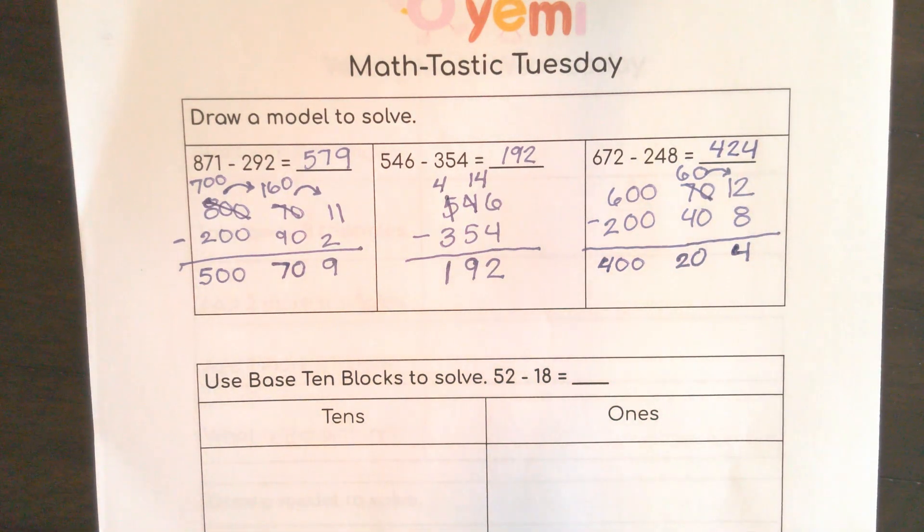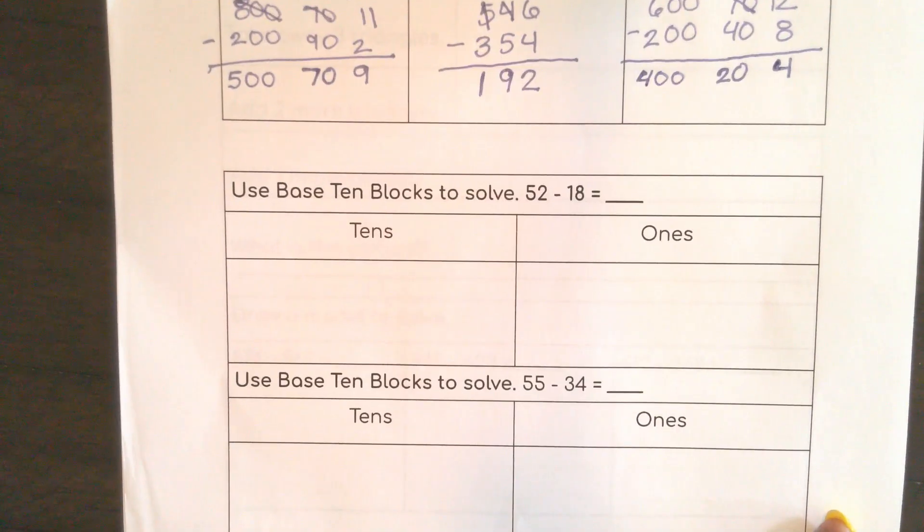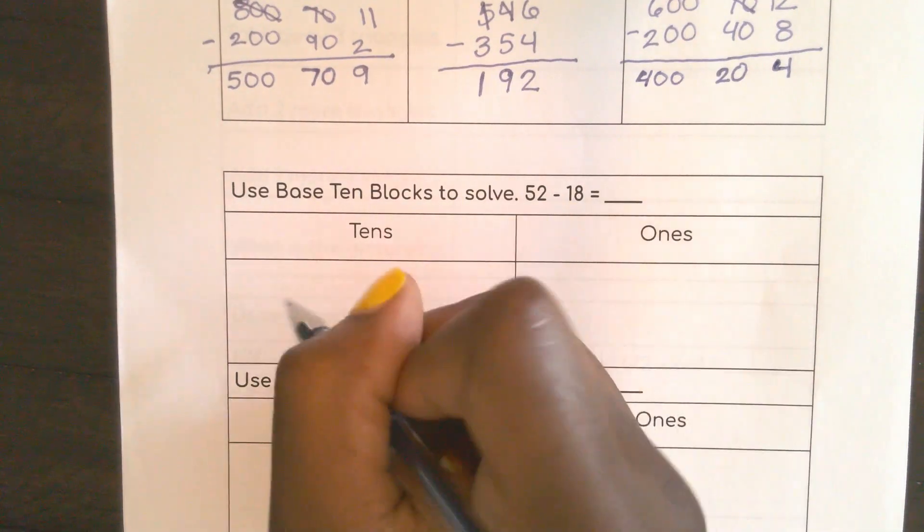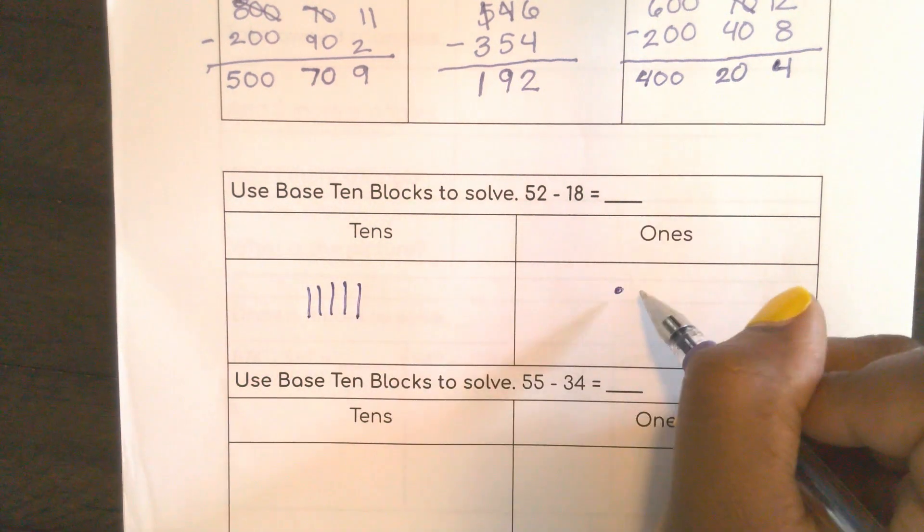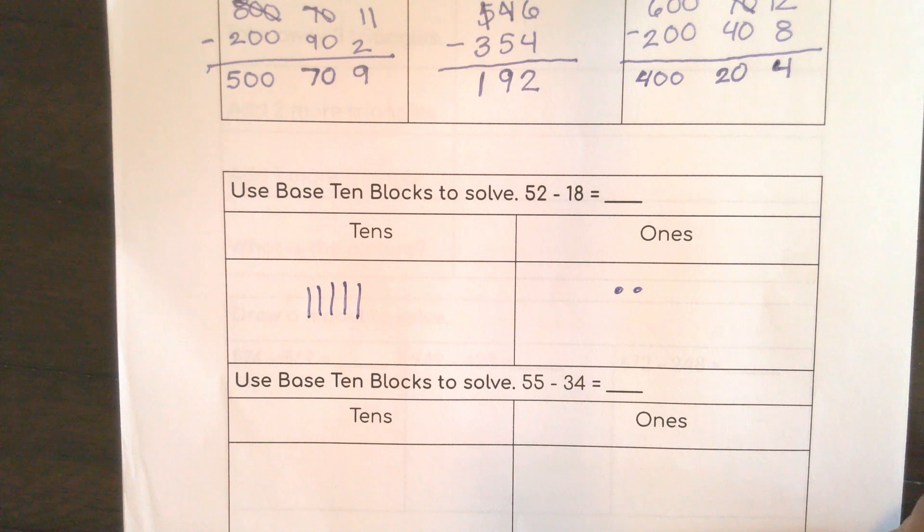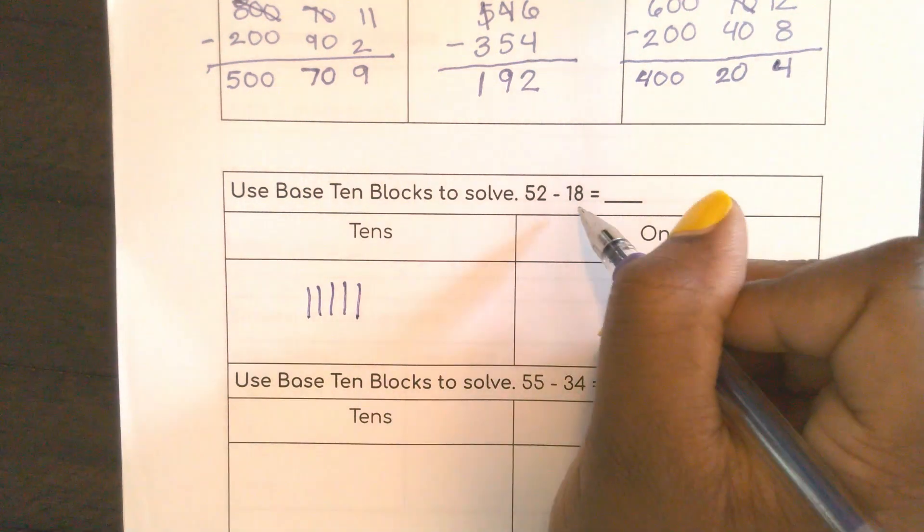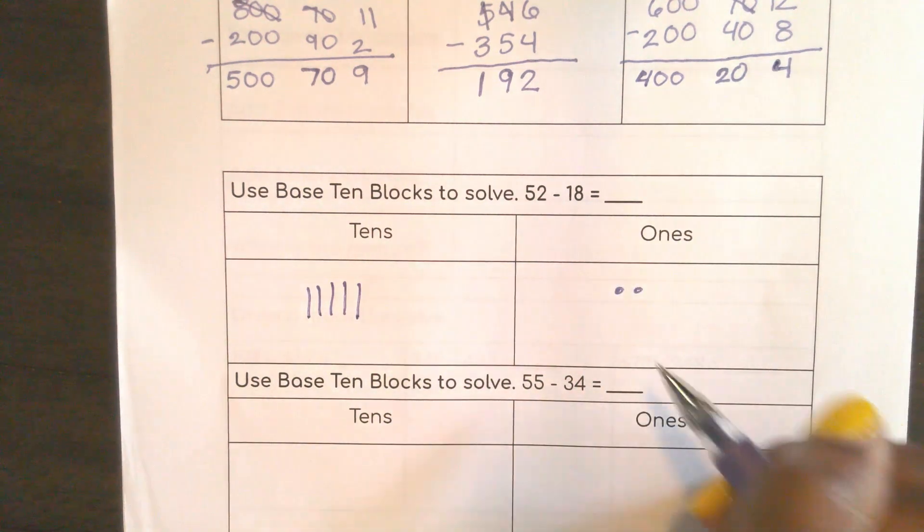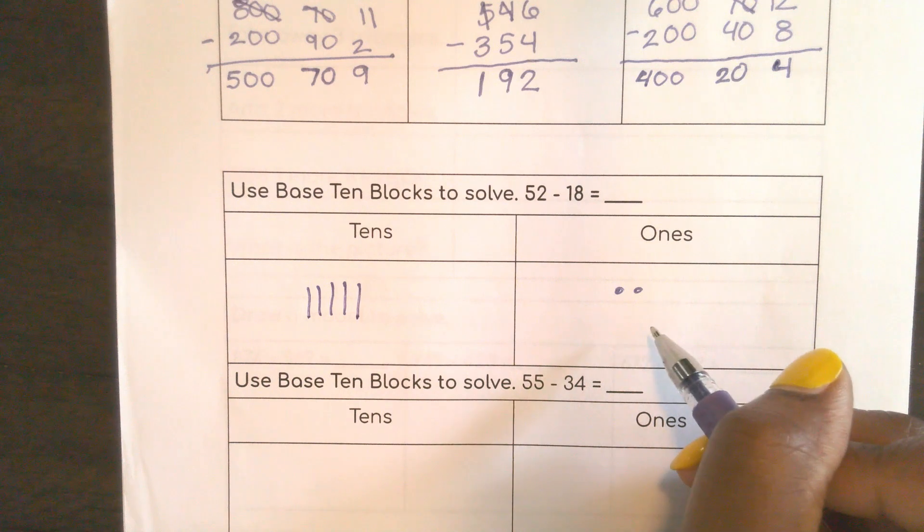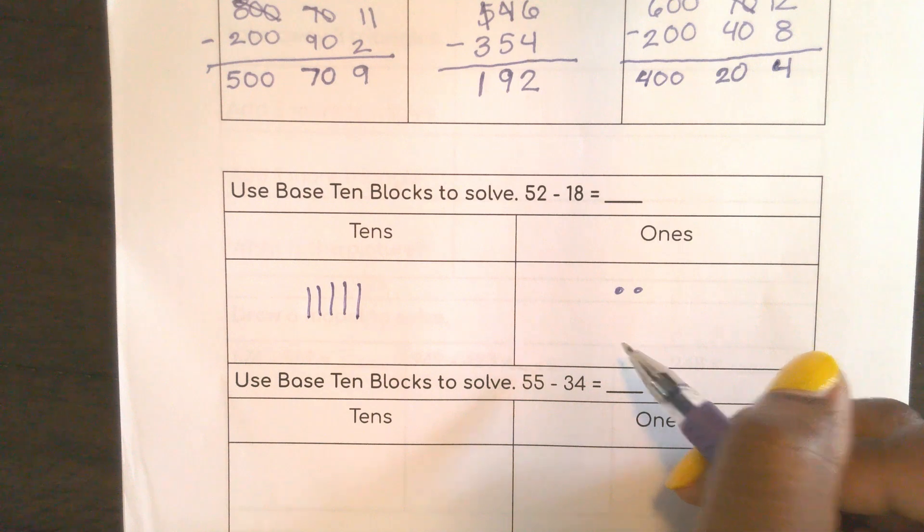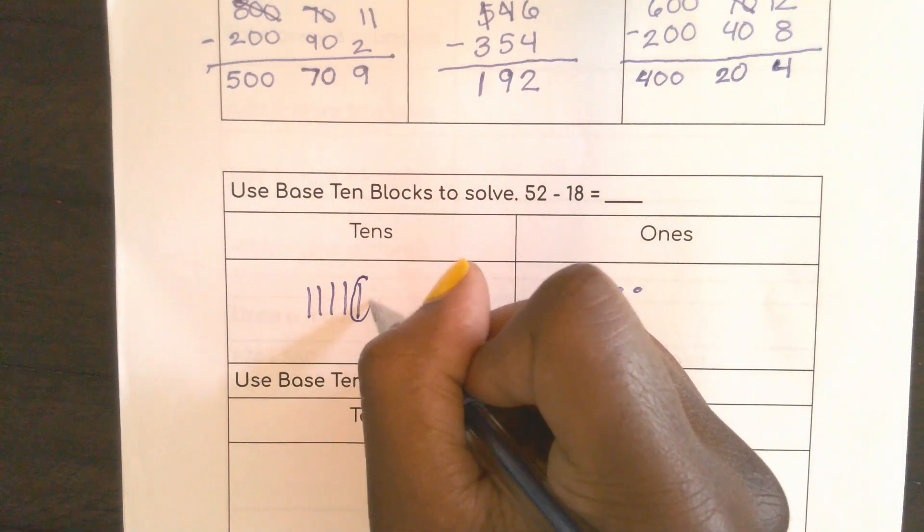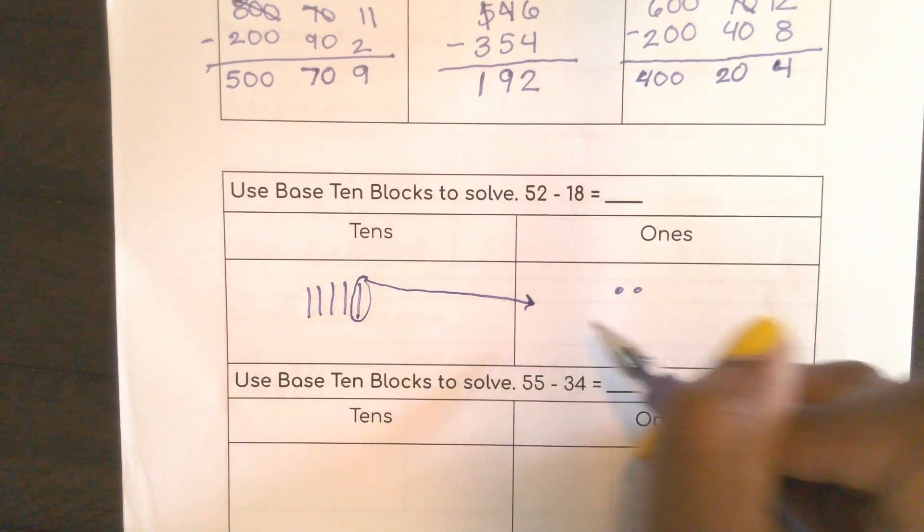Now I can use those base 10 blocks. So let's start with the 52. 10, 20, 30, 40, 50, and 2. And I'm going to subtract this 18. Remember I have to start in my ones place always. So if I have two ones, can I cross out 8? I cannot. So I'm going to move this over here.